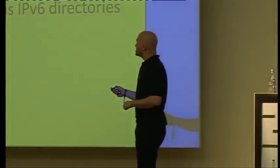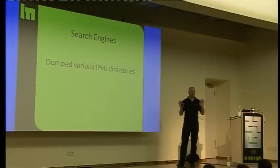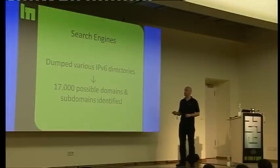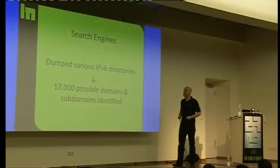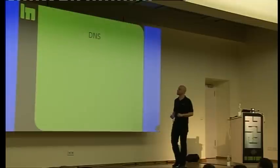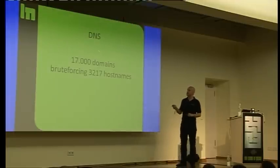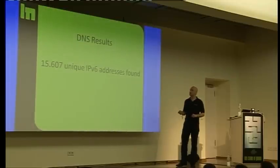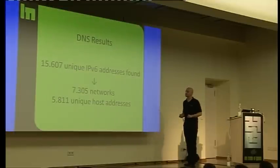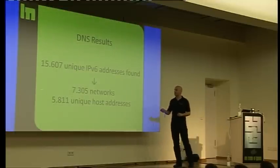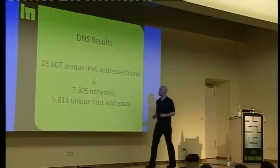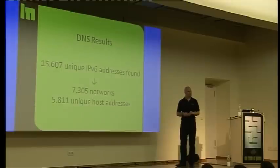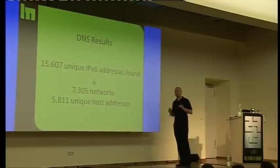Search engines. I dumped various IPv6 directories. I got 17,000 possible domains and subdomains identified. Then I did some DNS enumeration. For all the 17,000 domains, I brute-forced over 3,000 host names. Found lots of systems. I looked how many unique IPv6 addresses come up. That was something like 15,000 in 7,000 networks.